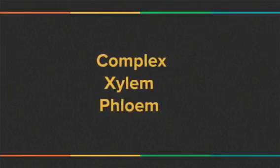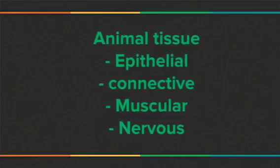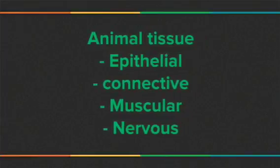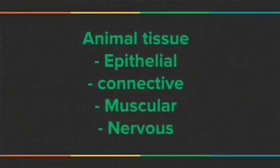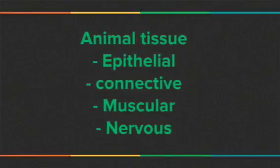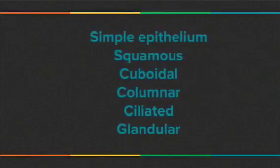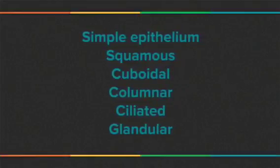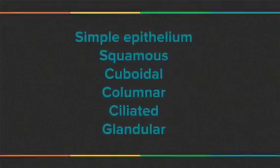Animal tissue consists of four types: epithelial, connective, muscular, and nervous. Simple epithelial consists of five types: squamous, cuboidal, columnar, ciliated, and glandular.